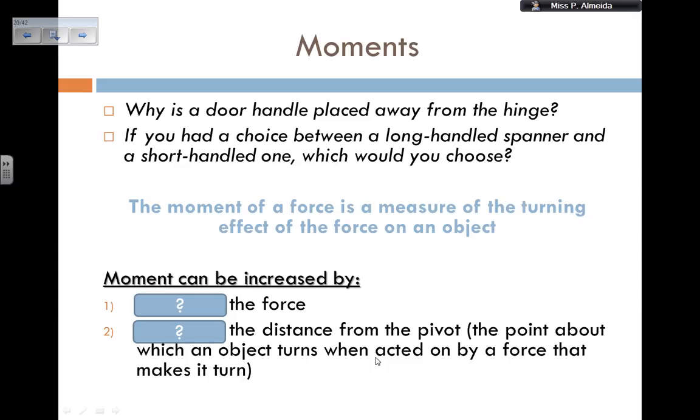Now, the moment of a force is a measure of the turning effect of the force on an object. And I can increase it two ways: increasing the force, because moment is force times distance, or increasing the distance from the pivot. And again, the pivot is the point about which an object turns when acted by that force.